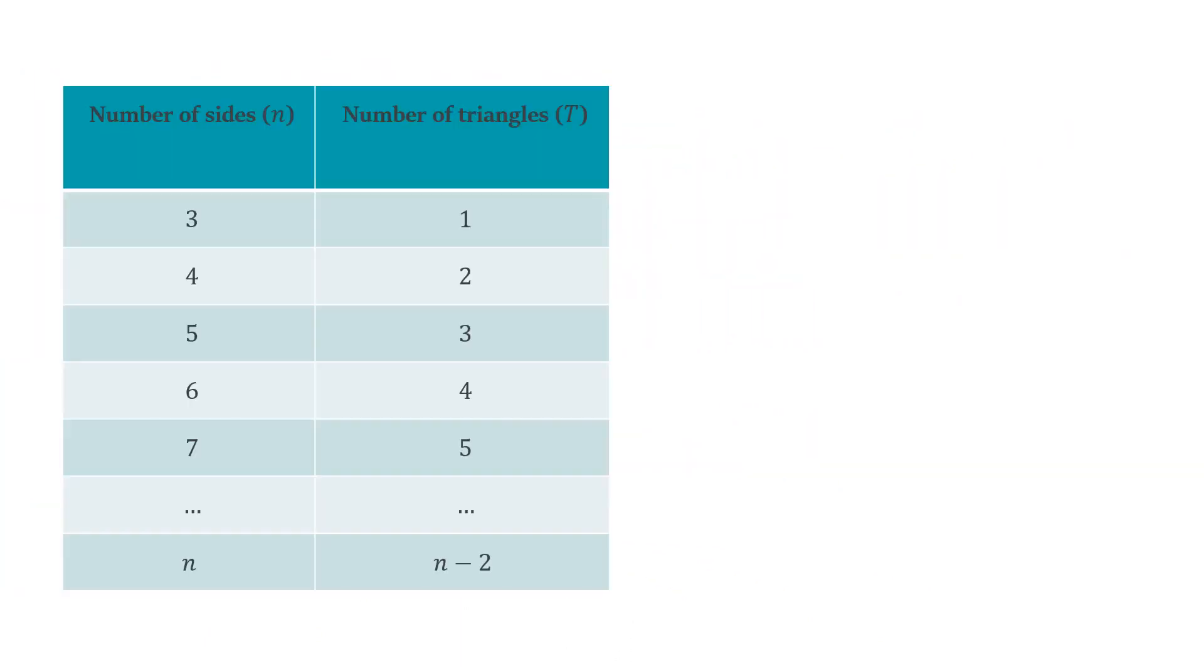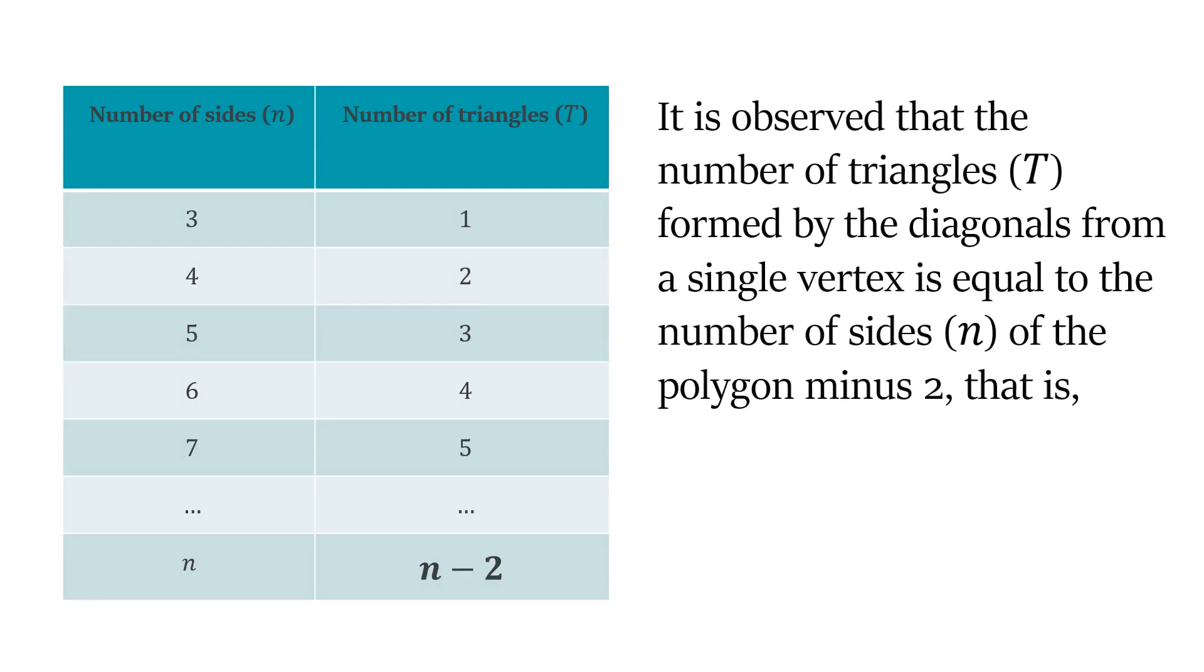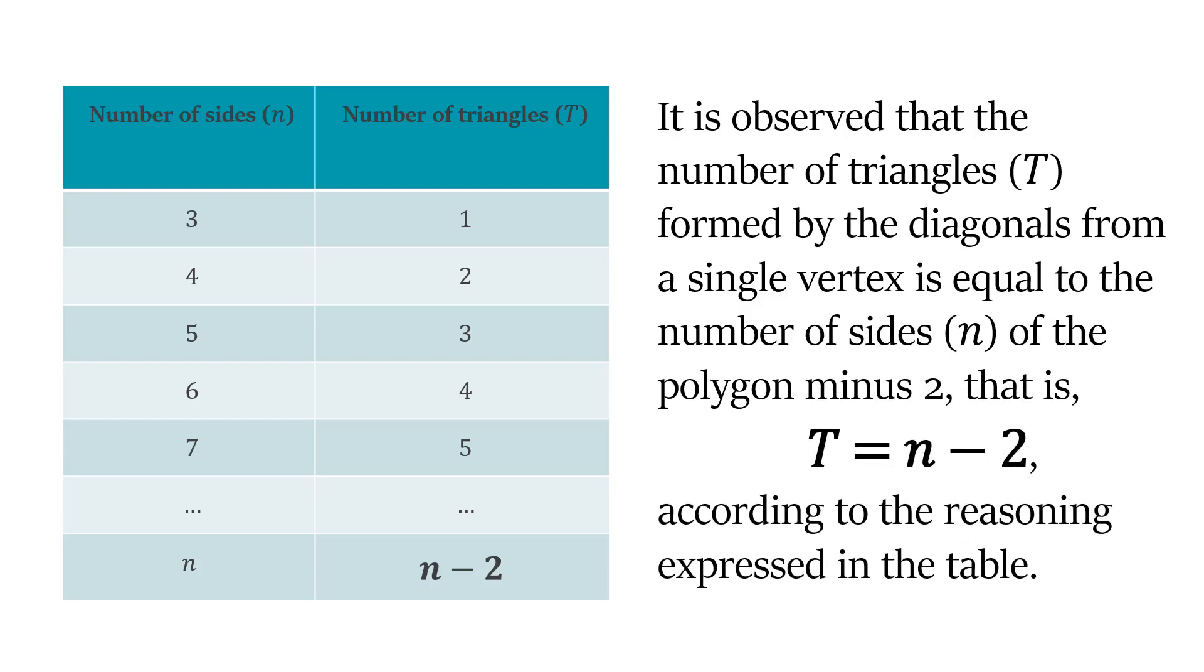Look at the table shown here. It is observed that the number of triangles (T) formed by the diagonals from a single vertex is equal to the number of sides (n) of the polygon minus 2, that is, T = n - 2, according to the reasoning expressed in the table.